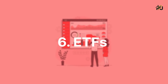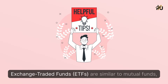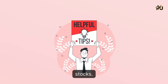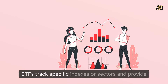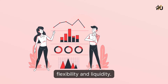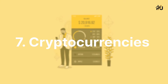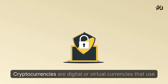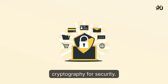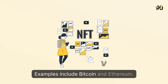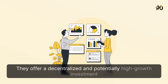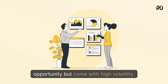6. ETFs — Exchange Traded Funds. ETFs are similar to mutual funds, but they trade on stock exchanges like individual stocks. ETFs track specific indexes or sectors and provide flexibility and liquidity. 7. Cryptocurrencies. Cryptocurrencies are digital or virtual currencies that use cryptography for security. Examples include Bitcoin and Ethereum. They offer a decentralized and potentially high-growth investment opportunity, but come with high volatility.